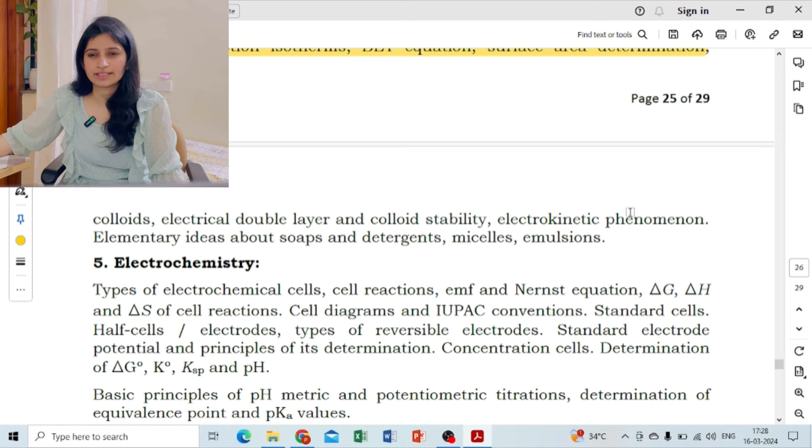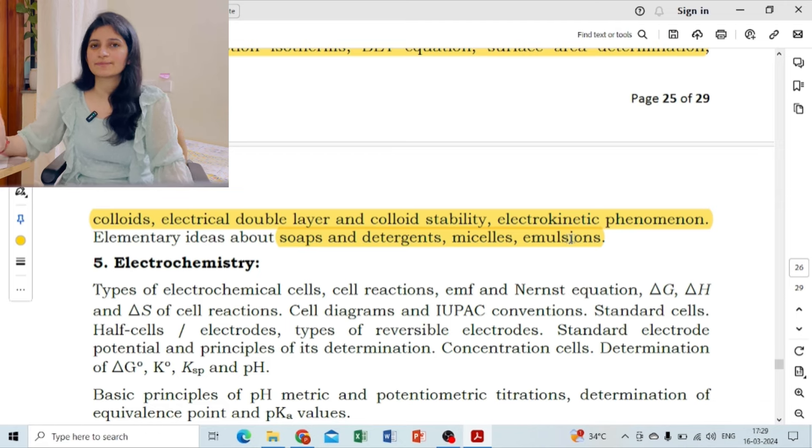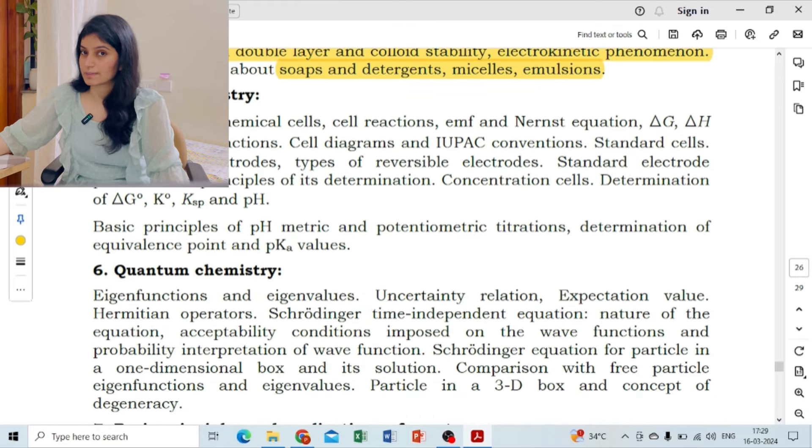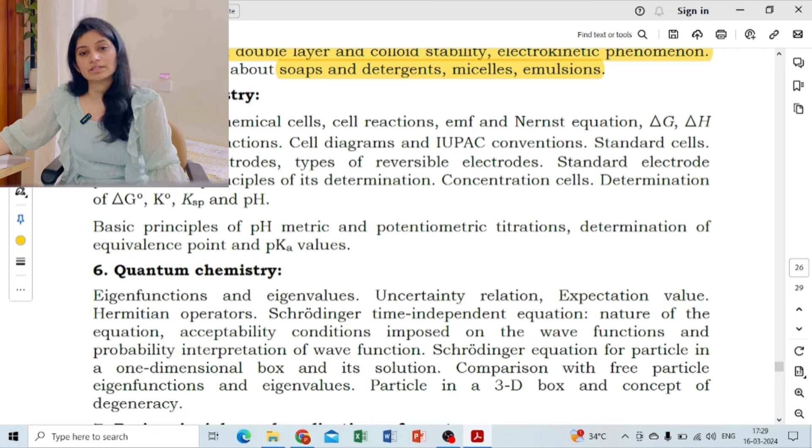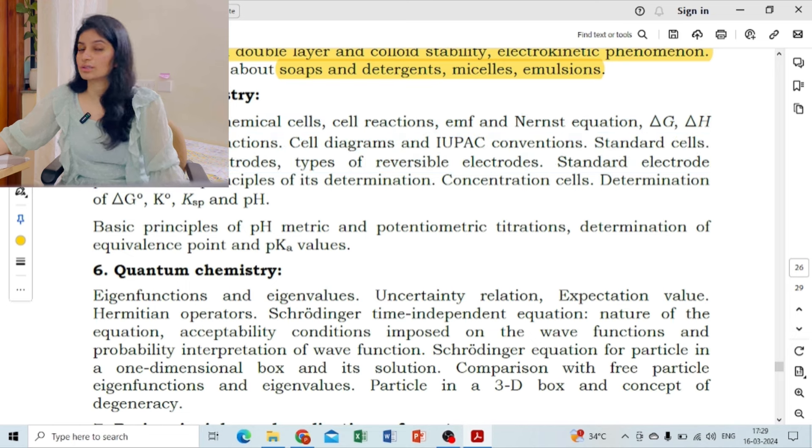Surface chemistry - colloids, electrical double layer, colloid stability. I did not do that completely. I had a lot of confusion so I didn't do it. Soaps and detergents, micelles, emulsions - I had not made many notes. I opened Google and searched soaps and detergents. I made a page of soaps and emulsions. So if you have any problems, you should write something. You should not leave it blank. You should have at least three pages. Then electrochemistry - if you have notes, they are sufficient. All topics, every topic is in your notes. If there are no notes, you will get all of them in K.L. Kapoor.